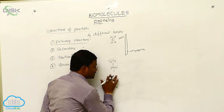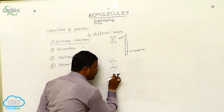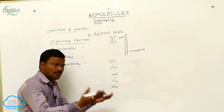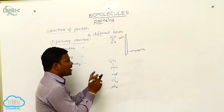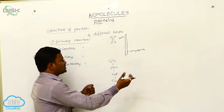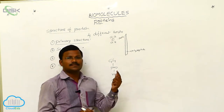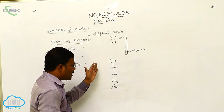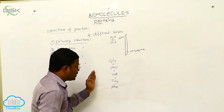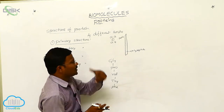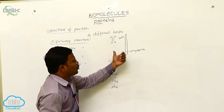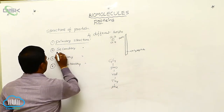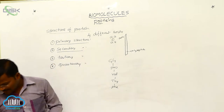If any changes take place — for example, in place of proline, adding valine or any other amino acid — by changing any amino acid with another in the primary structure, it results in the formation of a different protein. That means when any amino acid in the sequential arrangement is substituted with another, the protein also changes.